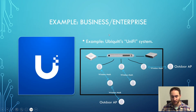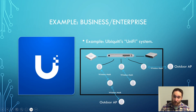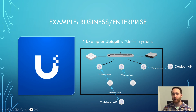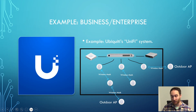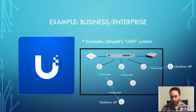Here's an example using Ubiquiti's UniFi system, which offers mesh Wi-Fi capability. We have a separate router or gateway, a separate switch, and a separate network controller. Three access points here are acting as uplink access points — they're hardwired into the network and form the backbone of the mesh Wi-Fi system. Then we have additional APs wirelessly meshing to those uplink access points. In this case, one AP is meshing to another wireless access point, which is then meshed to an uplink AP.